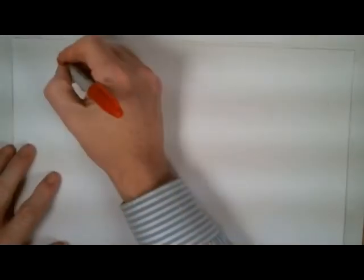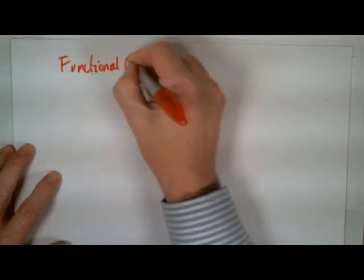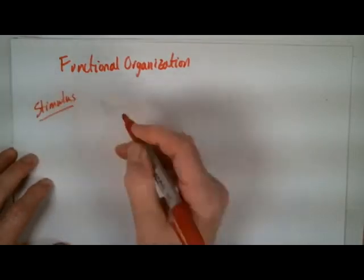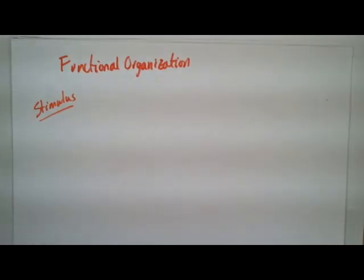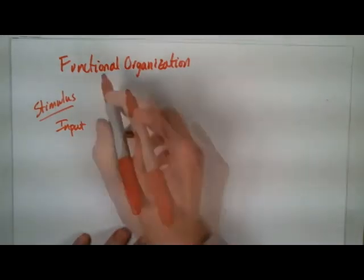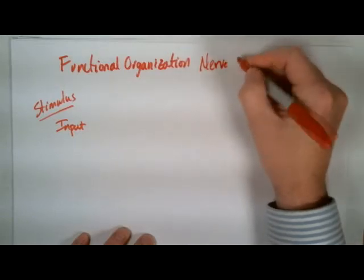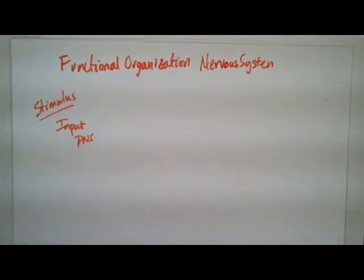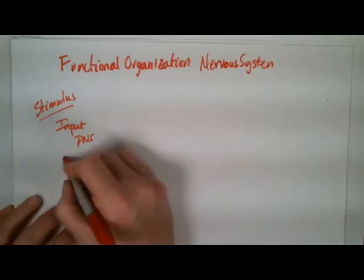Now let's look at the functional organization of the nervous system. We start with a stimulus — it could be any number of things, and there are five senses, any one of which could fire a signal. When a stimulus occurs, you have input coming into the nervous system through the peripheral nervous system via receptors and sensory neurons. It can be somatic or visceral, but it is definitely on the afferent side.